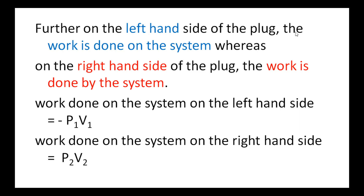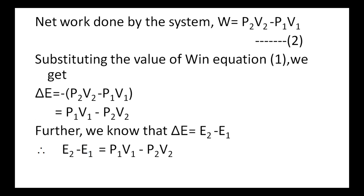Further, on the left-hand side of the plug, the work is done on the system, whereas on the right-hand side of the plug, the work is done by the system. So the work done on the system on the left-hand side is equal to minus P1V1, because here we are taking pressure-volume work. Work done on the system on the right-hand side is given by P2V2. So the net work done by the system W is equal to P2V2 minus P1V1. That is, total work done is given by W1 plus W2, which equals minus P1V1 plus P2V2, or P2V2 minus P1V1.